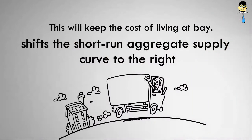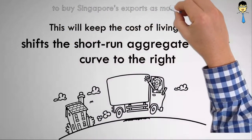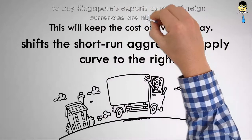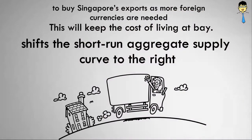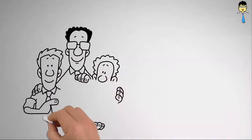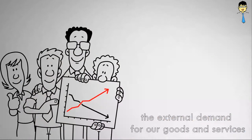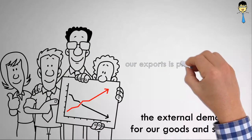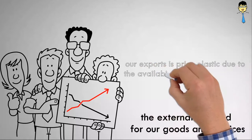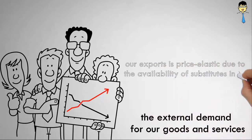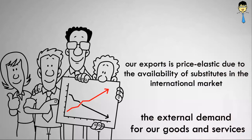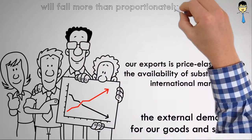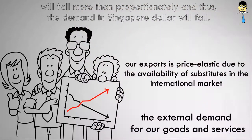A stronger Singapore dollar would mean that it is more expensive for foreigners to buy Singapore's exports, as more foreign currencies are needed to exchange for the same amount of Singapore dollars, ceteris paribus. This will dampen the external demand for our goods and services. Assuming that the demand for our exports is price elastic due to the availability of substitutes in the international market, the quantity demanded in foreign currencies will fall more than proportionately, and thus the demand in Singapore dollar terms will fall.